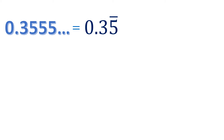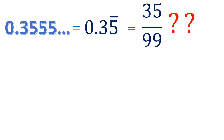Now consider 0.35555... — this decimal is a bit different because there is a digit that is not repeating. We write it as 0.3 and 5 bar, where the bar does not include the 3 because it's not repeating. We cannot simply write it as 35/99, because the 3 is not repeating and should not be included on top. So we need a different method to convert this kind of decimal into a fraction.